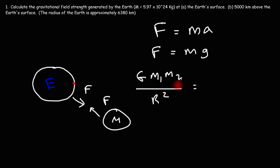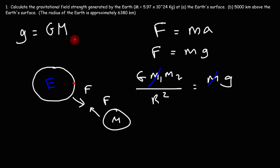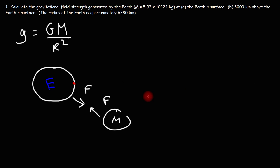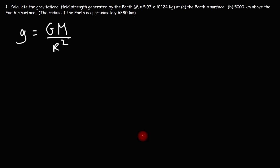Where r is the distance between, in this case, the center of the Earth and the center of the Moon. Now we can cancel one of the m values in this equation, and this gives us g — gravitational acceleration, also known as gravitational field strength — equal to the gravitational constant times the mass of the object divided by r squared.